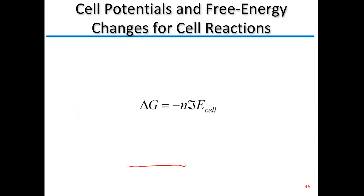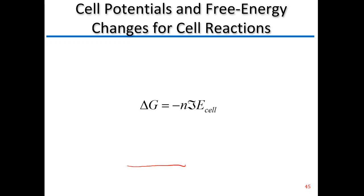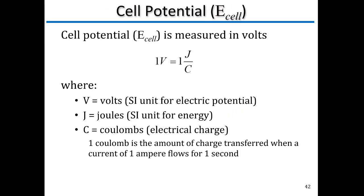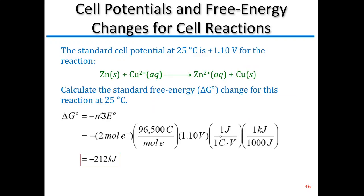Using 1 volt = 1 joule/coulomb to cancel units, then converting joules to kilojoules, we end up with ΔG° = −212 kJ. Since ΔG < 0, this is a spontaneous reaction, which is consistent with our expectation for a voltaic cell.